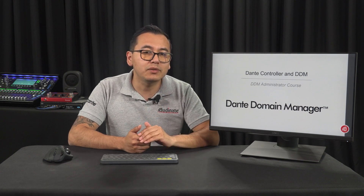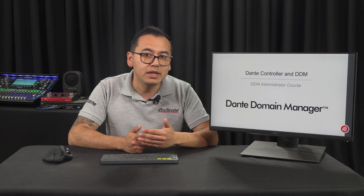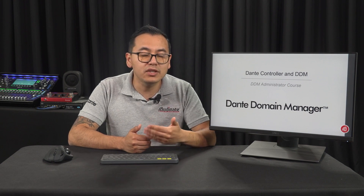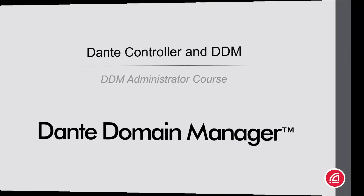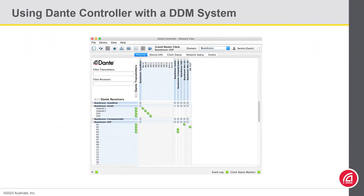It is good to point out that when we use Dante Domain Manager, we will still be using Dante Controller for those same operations. The main difference is that users will need to log into the DDM server in Dante Controller with their username and password. Once successfully connected, a drop-down Domains menu list will appear, allowing you to access the domains that you have been authorized to work with. From then on, everything else that we already know in Dante Controller will still apply.